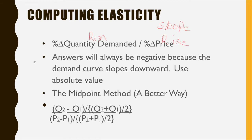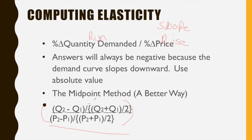When looking at elasticity of demand, the answer is always going to be negative, but we just use the absolute value. We use the midpoint method. The midpoint formula — one of the few you'll need to memorize — is: Q2 minus Q1, divided by (Q2 plus Q1)/2, all over the same formula for price. Once you run that formula, you'll get a value between zero and infinity.